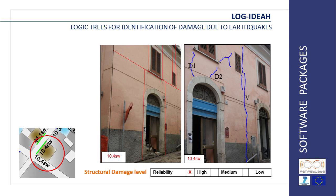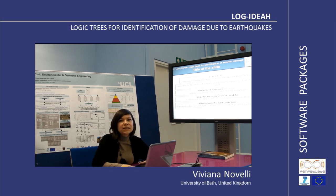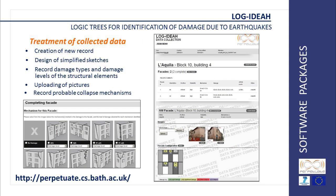Once all information has been recorded in Log Idea, the user must also specify the reliability of the data collection. Log Idea will then use logic trees to interpret the data collected on site or by pictures. To help the user in data collection, a platform already available online allows the user to create a record, design a simplified sketch of the façade under consideration, collect the type and level of damage, upload pictures, and record the possible mechanism occurring on the façade.